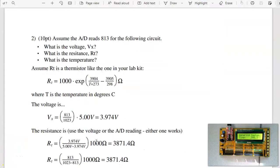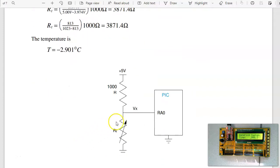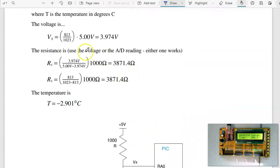On to problem number two. In problem two, I have a voltage divider. Suppose this reads 813 on the A to D reading. What's that mean in terms of voltage, resistance, and temperature? Well on the A to D, 0 reads as 0 volts. 1023 reads as 5 volts. So the voltage is this percentage of full scale. Full scale is 5 volts. It is 3.974 volts. So with the PIC, I can have a voltmeter.